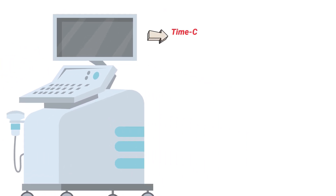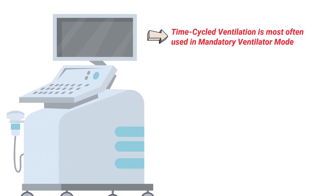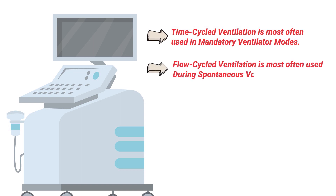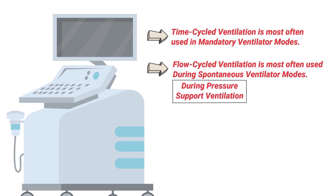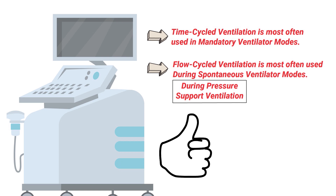Time cycle ventilation is most often used in mandatory ventilator modes, whereas flow cycle ventilation is most often used during spontaneous ventilator modes. An example would be during pressure support ventilation.